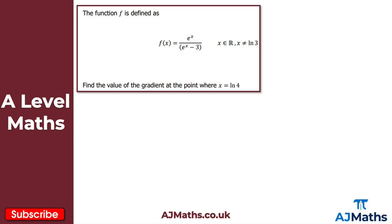Moving on to question 2, where we have the function f of x equal to e to the x over e to the x minus 3, where x is a real number but x cannot equal the natural logarithm of 3. We're asked to find the gradient at x equal to the natural logarithm of 4. Because we have a quotient of functions, we use the quotient rule. So u equals e to the x (the numerator), and v equals e to the x minus 3 (the denominator).